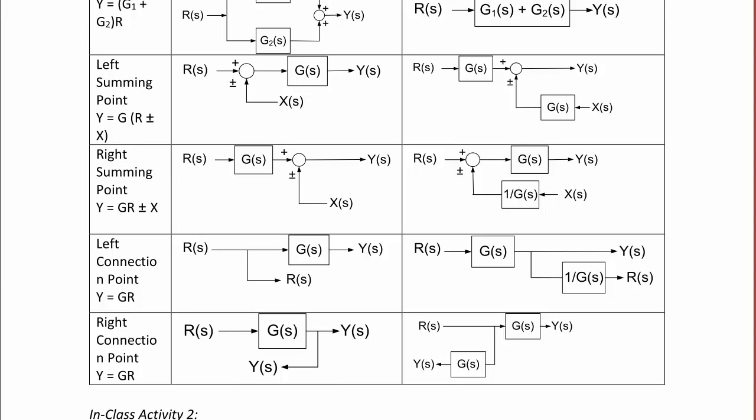We could also have a right summing point, shown here, where G(s) will eventually be a pre-filter in subsequent weeks, and that would be y is equal to gr plus or minus x.